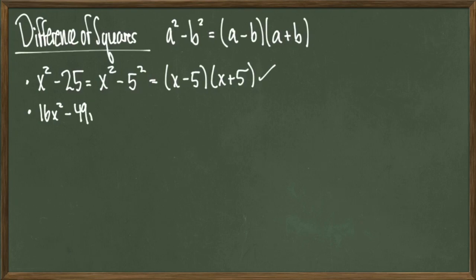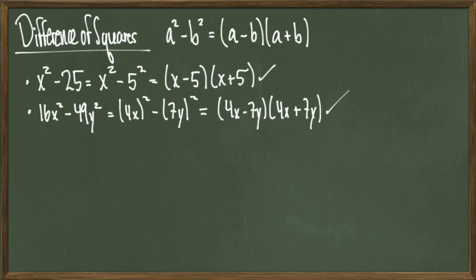In another example, 16x squared minus 49y squared can be written as 4x quantity squared minus 7y quantity squared. Using the formula above, we'll factor this into 4x minus 7y times 4x plus 7y.